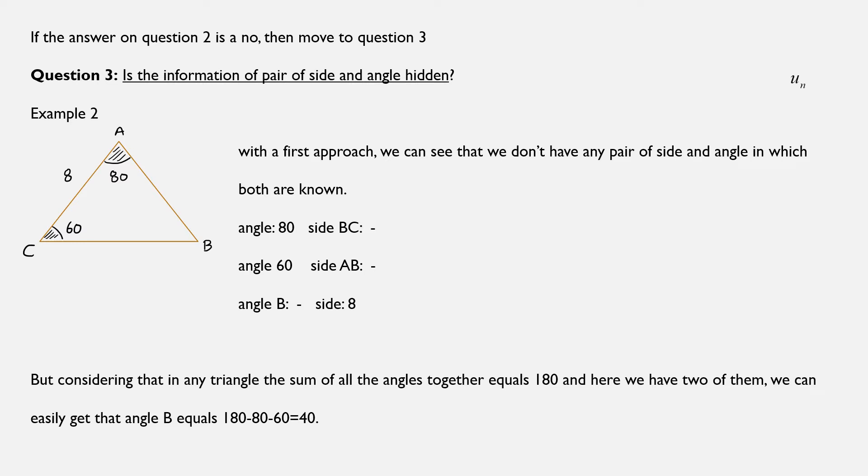We were given the triangle ABC we have in front of us. We were given that the measure of angle A equals 80, the angle C has a measurement of 60 degrees, and the length of side AC measures 8. With the first approach, we can see that we don't have any pair of side and angle in which both of them are known.